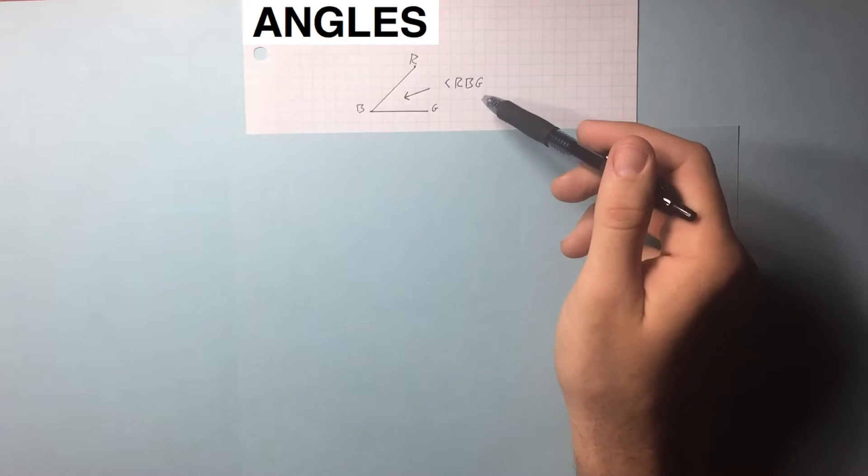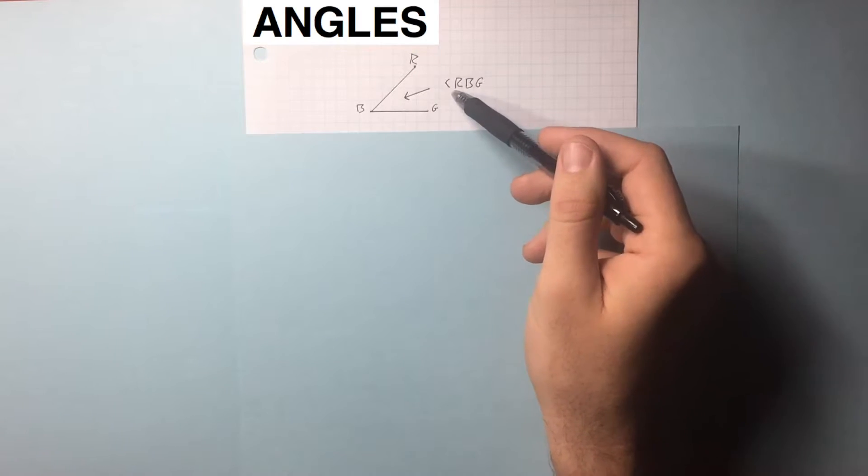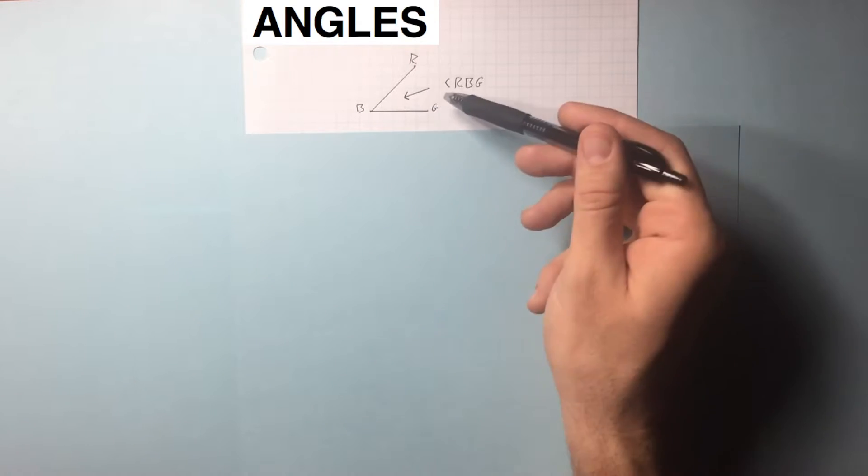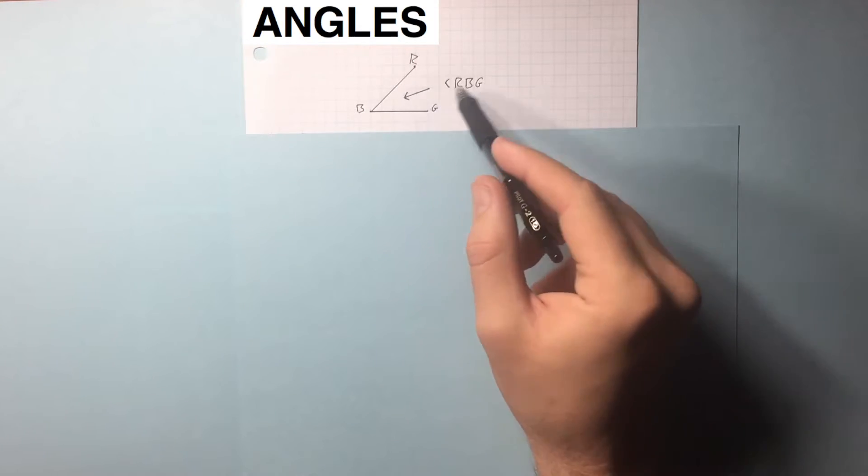Let's talk about angles. The way they refer to angles is by three letters. This is angle RBG. You take the first point, the center point, and the last point, and they're talking about the angle right in there.